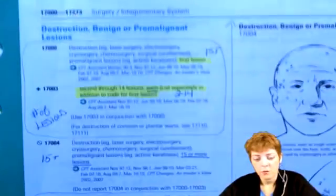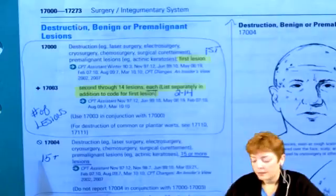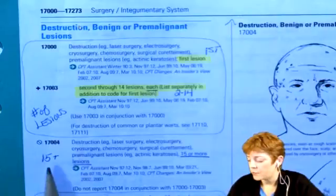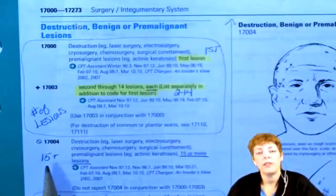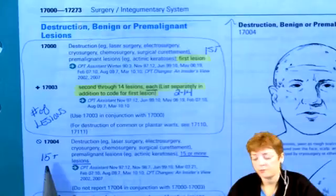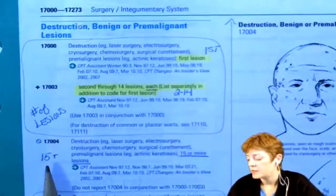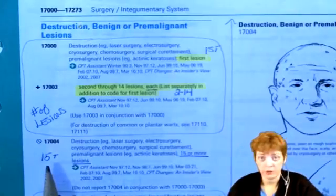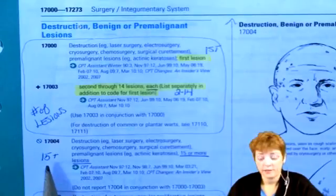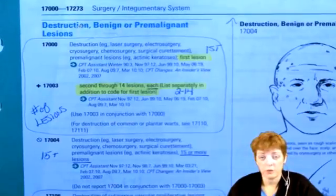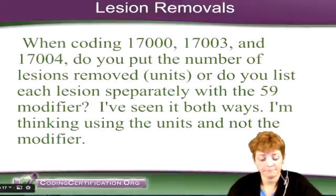You asked about 17004. That is used when you hit 15 or more lesions — then you use 17004. You only report 1 unit of it. So if you have 20 lesions, you're going to report just 1 unit of 17004.